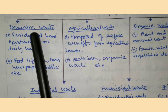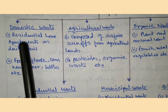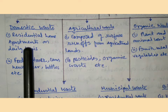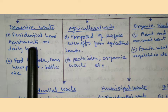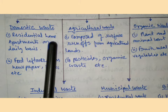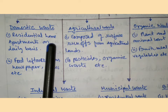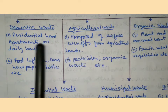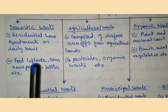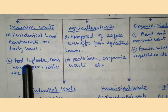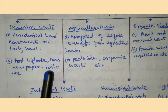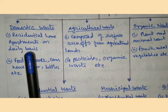Domestic waste comes from residences and home apartments. We get domestic waste from these sources on a daily basis — for example, food leftovers, cans, newspapers, bottles, etc.